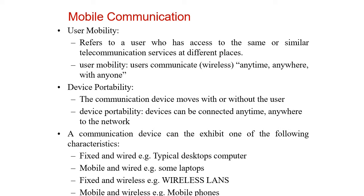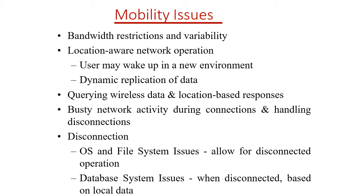A communication device can exhibit one of the following characteristics: either a fixed or wired network, like a typical desktop computer in your labs; a mobile and wired device, such as a laptop; a fixed and wireless device, such as a wireless LAN; or a mobile and wireless device, such as your mobile phone. When these types of characteristics are present, there may be certain issues.